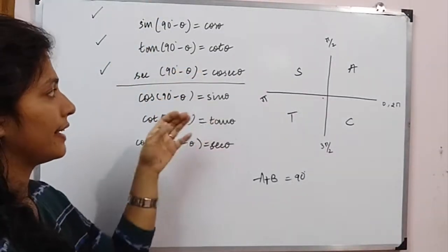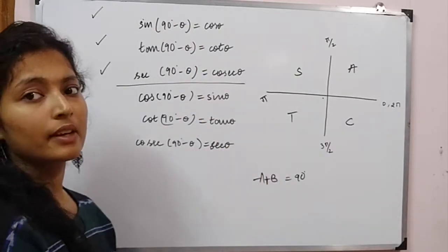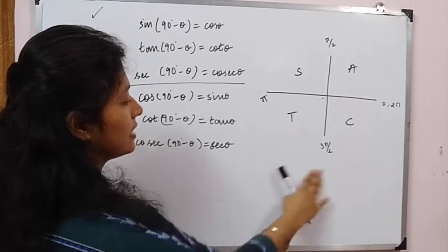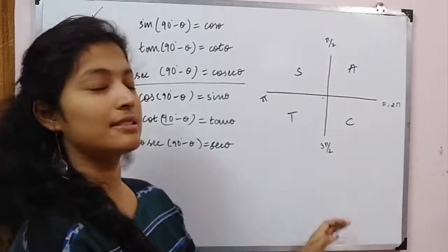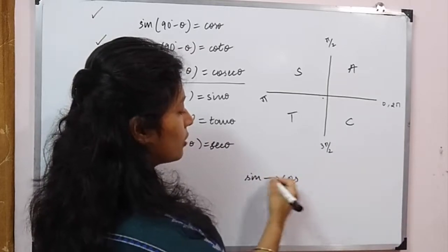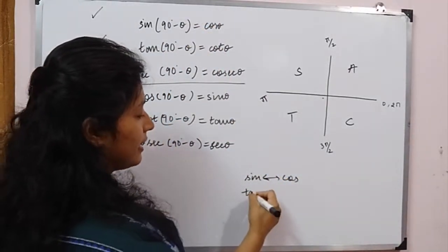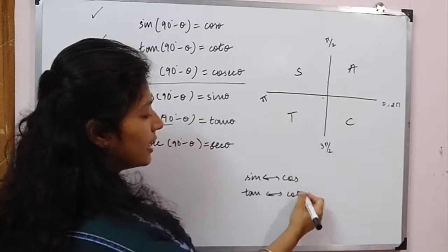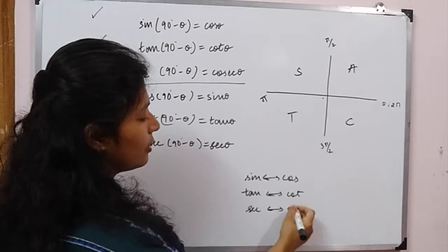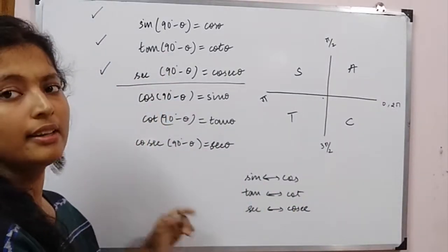We will try to solve it and remember the conversions. If we are on the vertical axis, how do we remember the conversion? Sine becomes cosine and cosine becomes sine. That is the conversion on the vertical axis. Tan becomes cot, and cot becomes tan. Sec becomes cosec, and cosec becomes sec. That is just the conversion.